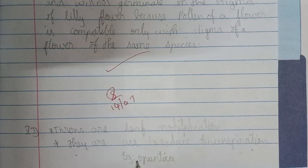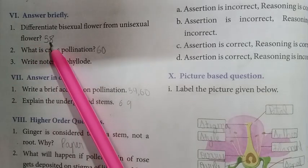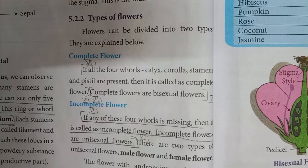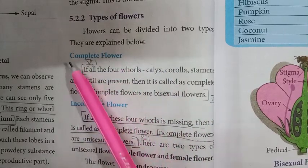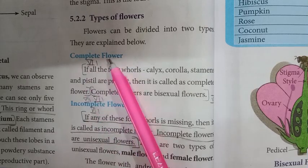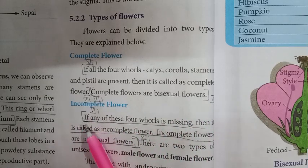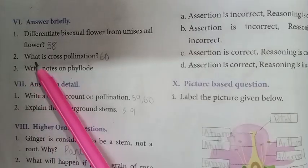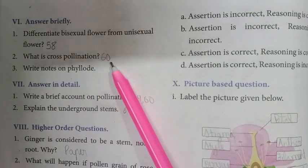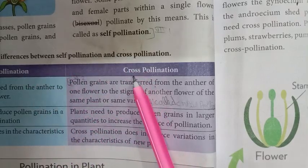Answer briefly. First question — refer to page number 58, right side, under the heading 'Types of Flowers': complete flower and incomplete flower. Mark the complete flower heading and the incomplete flower paragraph. If any of the parts are absent — third line, unisexual flowers — mark that. Next question: What is cross pollination? Refer to page number 60, from the table showing the difference between self pollination and cross pollination — cross pollination first point, mark it.